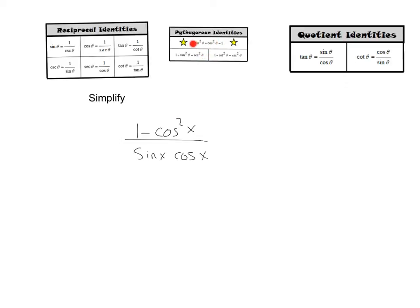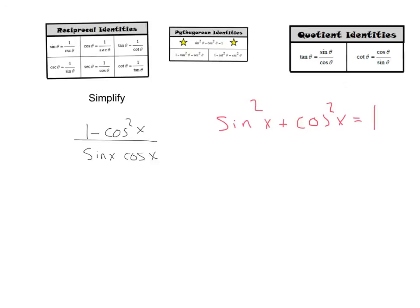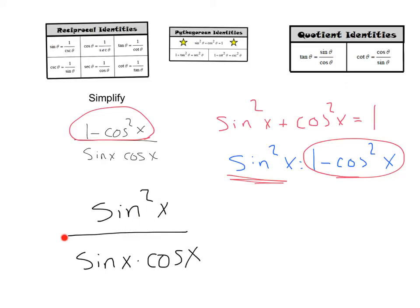Here, my first one, I have sine squared plus cosine squared equals 1. Now, if I do a little maneuvering here, since I have 1 minus cosine squared x, what if I subtracted cosine squared x from both sides? That's going to leave me with sine squared x equals 1 minus cosine squared x, and I can replace that 1 minus cosine squared x with my sine squared x here. That's going to leave me with sine squared x divided by sine x times cosine x.